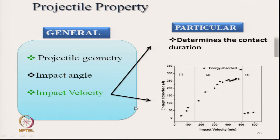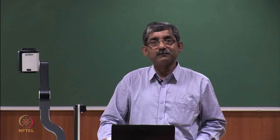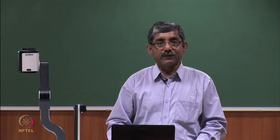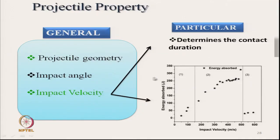Impact velocity is also important. As impact velocity increases — shown on the x-axis with energy absorbed on the y-axis — initially energy absorption increases, but at very high impact velocity it drops because the projectile simply penetrates through the fabric without much energy absorption.